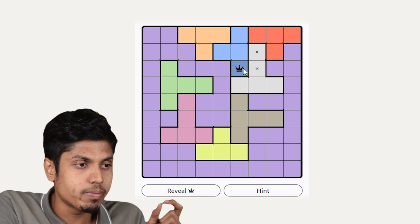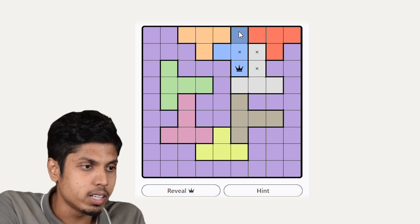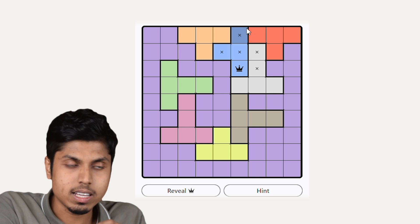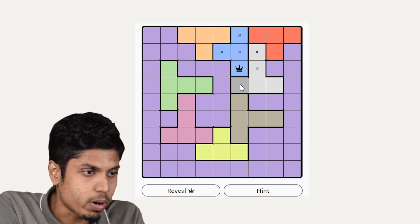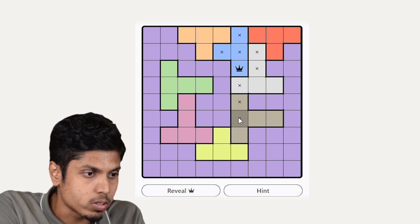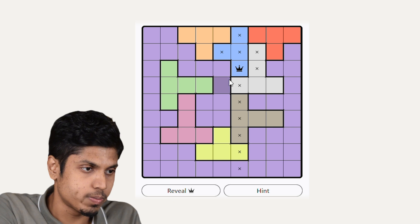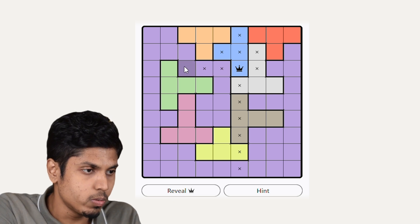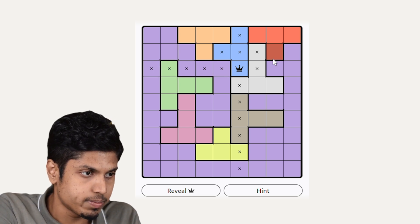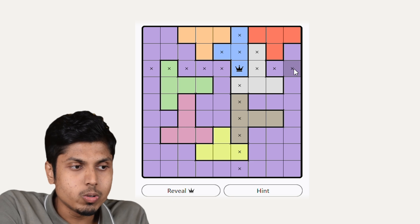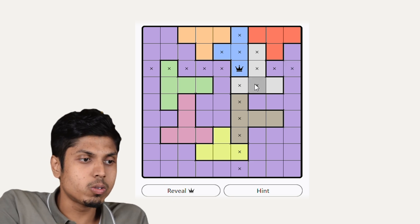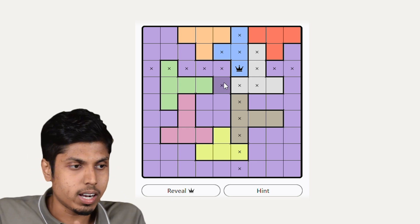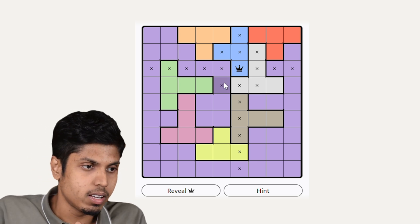After filling up the crown, we have to mark the blue region with cross as the blue region is completely filled, and we have to mark with cross all over through its column and its row. We should also mark the neighboring squares of the crown with cross.